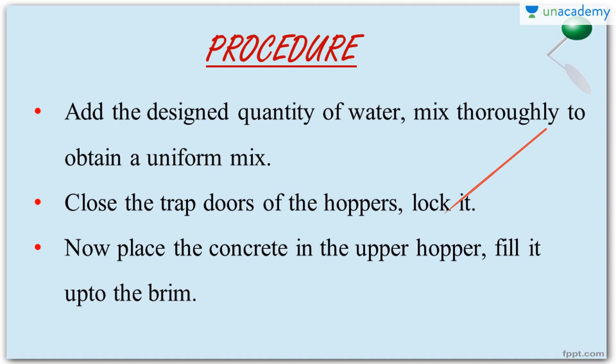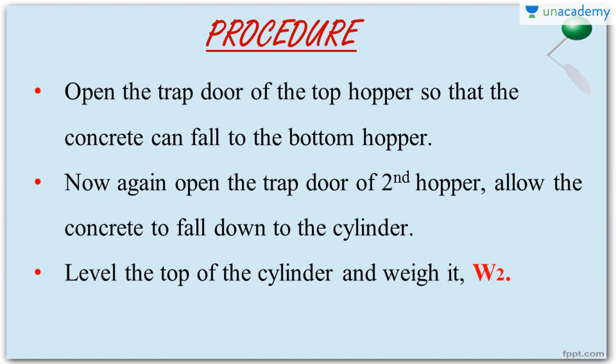Now add water to the dry ingredients as per the design and mix thoroughly to obtain a uniform mix. Close the trap doors of both hoppers and lock them. Place the concrete in the topmost hopper — hopper one — filling it completely to the top and cleaning any excess from the sides. Now release the lock and open the trap door of hopper one immediately, so the concrete falls from hopper one into hopper two with the help of gravity.